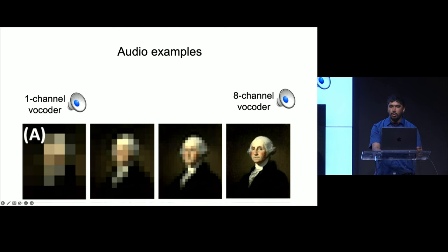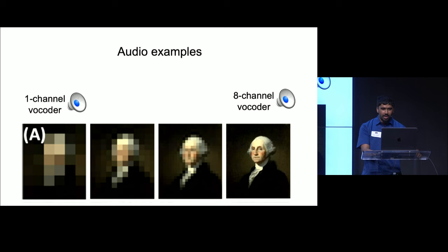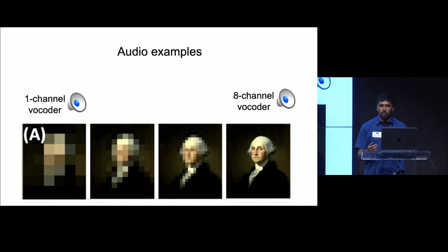Now I'll play some examples of how this might work for speech. First, an example of a speech utterance processed by a one-channel vocoder, and then the same utterance processed by an eight-channel vocoder. Hopefully you're able to tell the difference in intelligibility when more spectral channels are added.